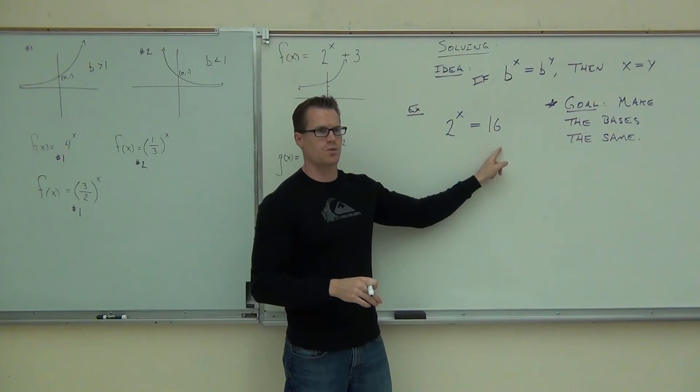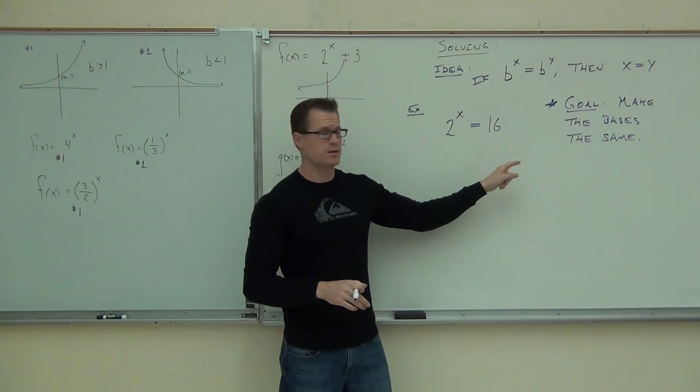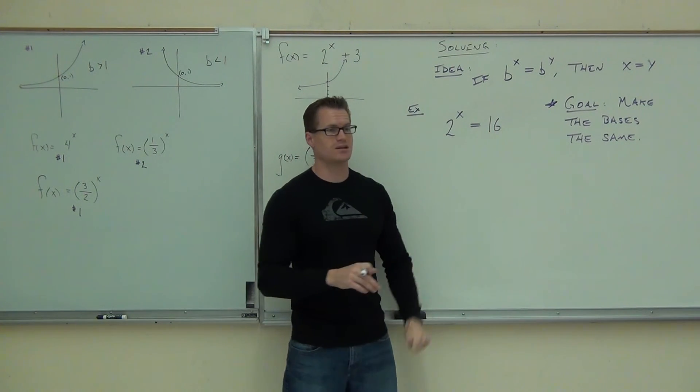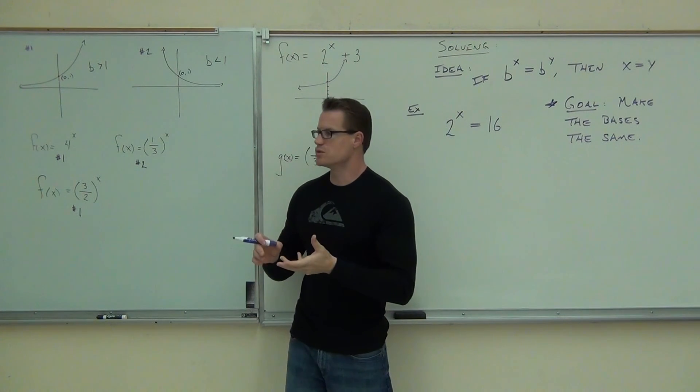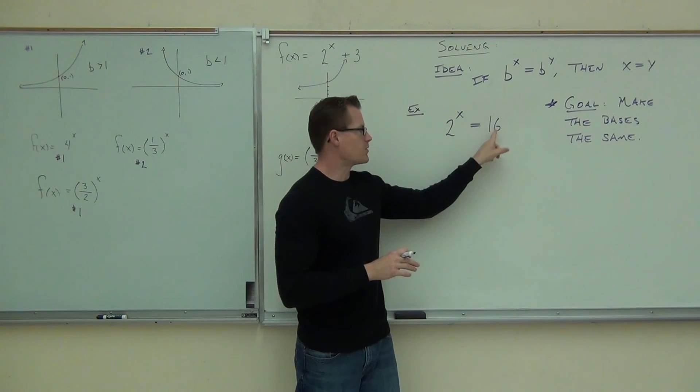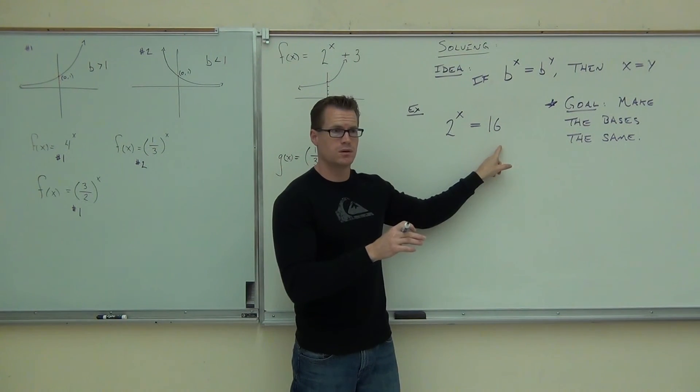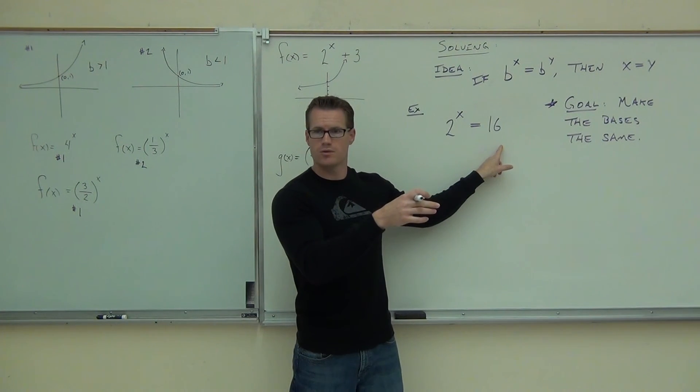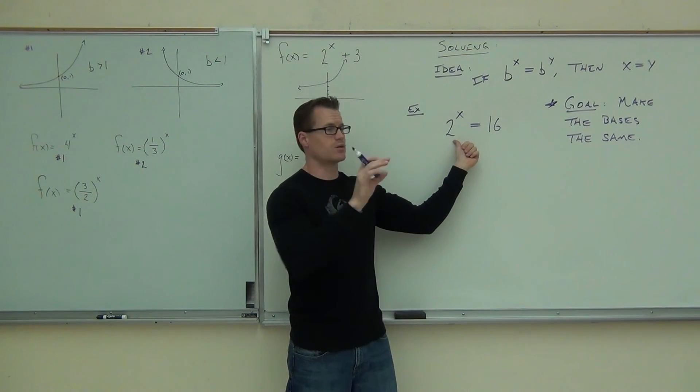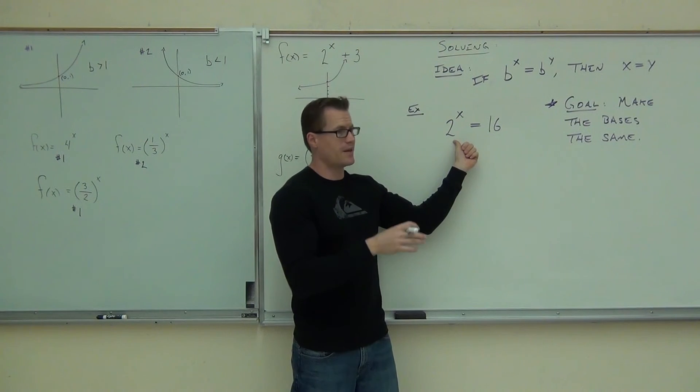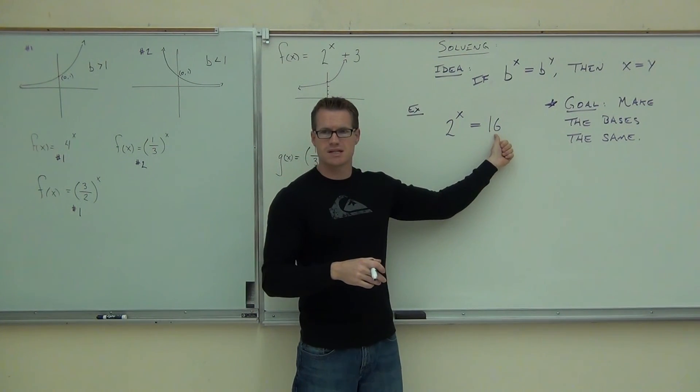Now, so our goal is to try to make the bases the same. Do I have the same bases here right now the way it is? That says 2 to the x. That says 16. Well, what I need to do is somehow make that into a 2. A 2 to some power. Do you follow me? Because our base over here, that's given. We can't change that one right now. That's 2. 2 to the x. This one, though, that's 16.